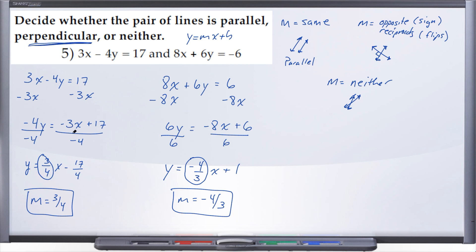To recap: if both equations in y equals mx plus b give the exact same slope — for example, m equals 3 over 4 and m equals 3 over 4 — they would be parallel. If the slopes were something like negative 3 over 4 and negative 4 over 5, they're not the same and not opposite reciprocals, so they'd be neither. But for number five, our answer is perpendicular because we ended up with opposite reciprocal slopes.